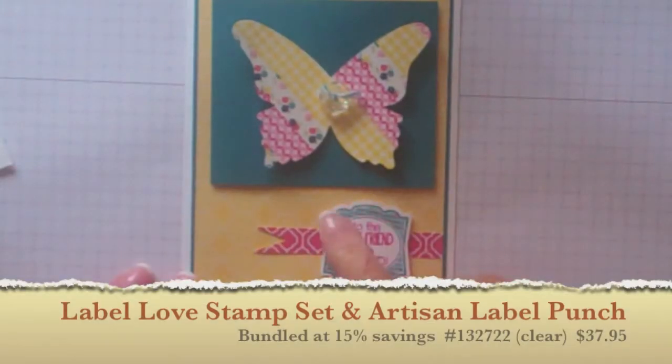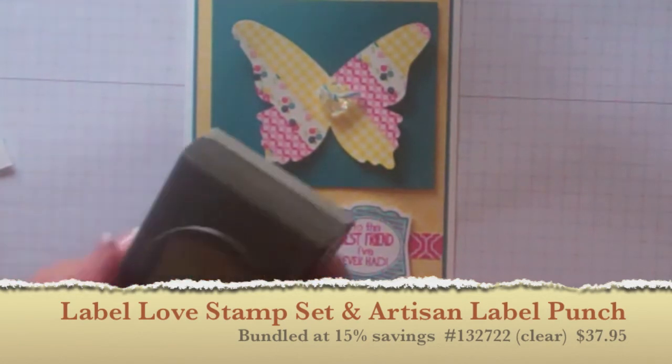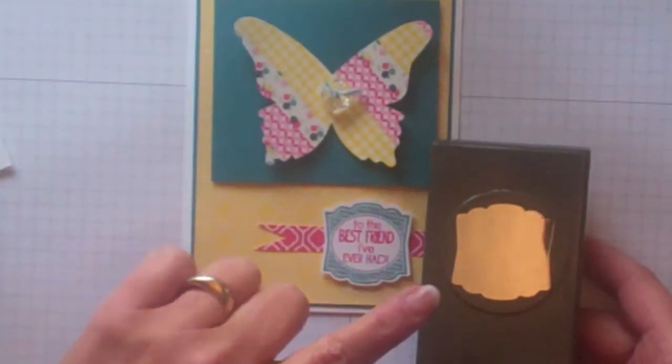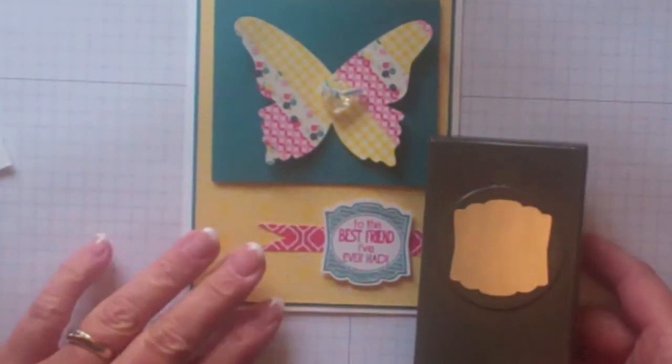The next element we want to look at is this piece here and this is from the Label Love stamp set and it has a matching punch. This is the artisan punch which is really great so you can stamp and then punch it out. You don't have to cut it out. So I'll show you how to do that.